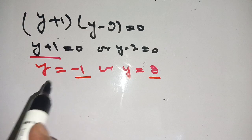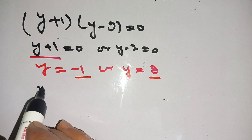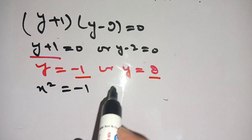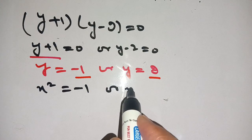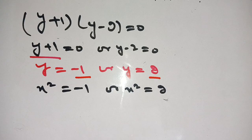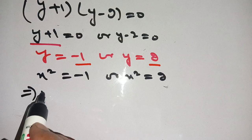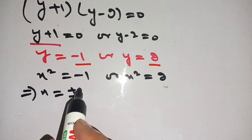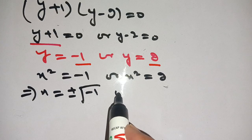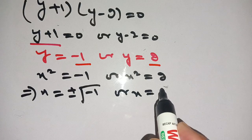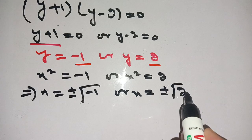As in place of y we substituted x square, therefore x square is equal to minus 1, or x square is equal to 2. When we remove this square, we get x is equal to plus minus square root of minus 1, or x is equal to plus minus square root of 2.